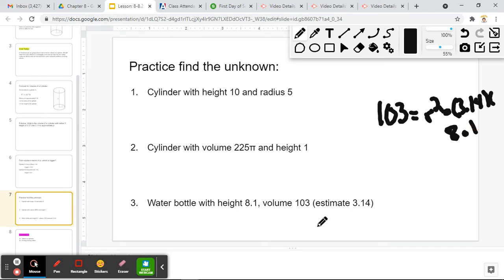So on this one, we have 103 equals r² times 3.14 times 8.1. First, I'm going to do 8.1 times 3.14.